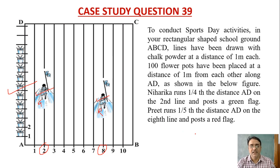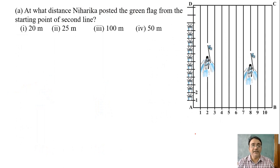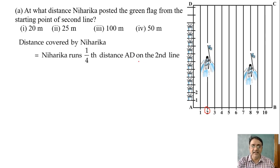So based on these conditions some questions are there. First question: At what distance Niharika posted the green flag from the starting point of second line? So already in the question it is given one fourth of the distance AD and the distance AD is 100. So one fourth of 100 will be equals to 25. So which option is the correct one? Option 2.